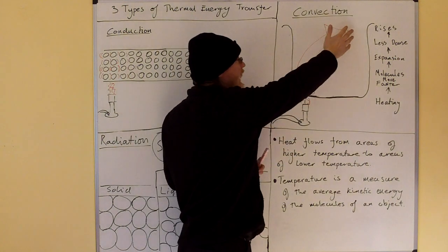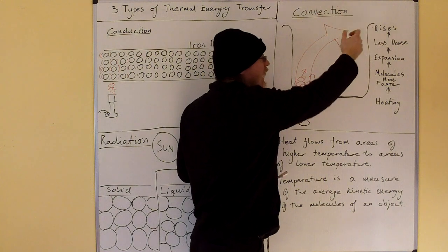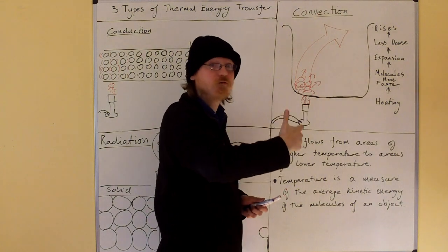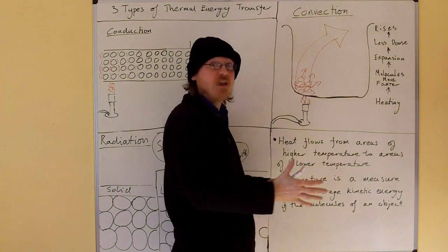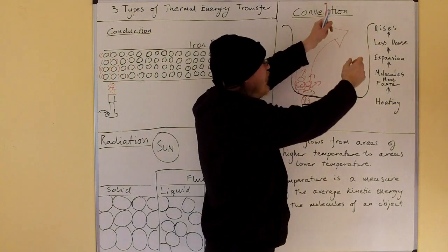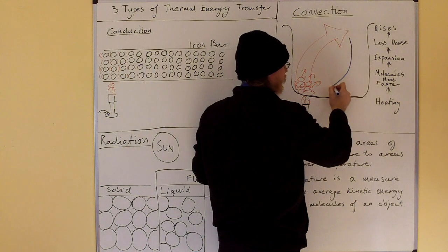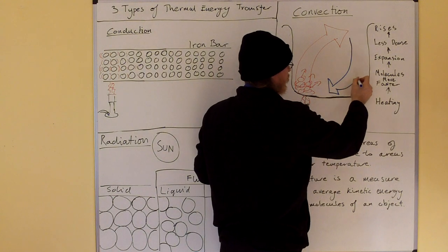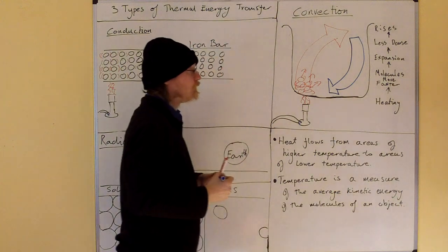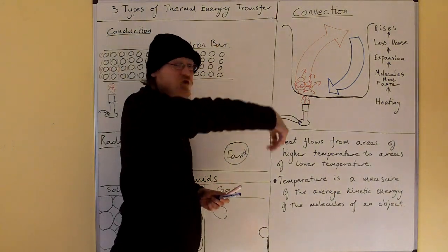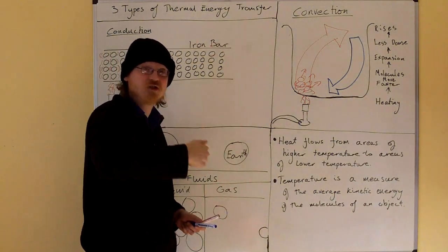When we get to this corner, we get cooling. This cooling makes the molecules move around slower, so they contract. This part of the fluid becomes more dense and therefore sinks. This creates a convection current.